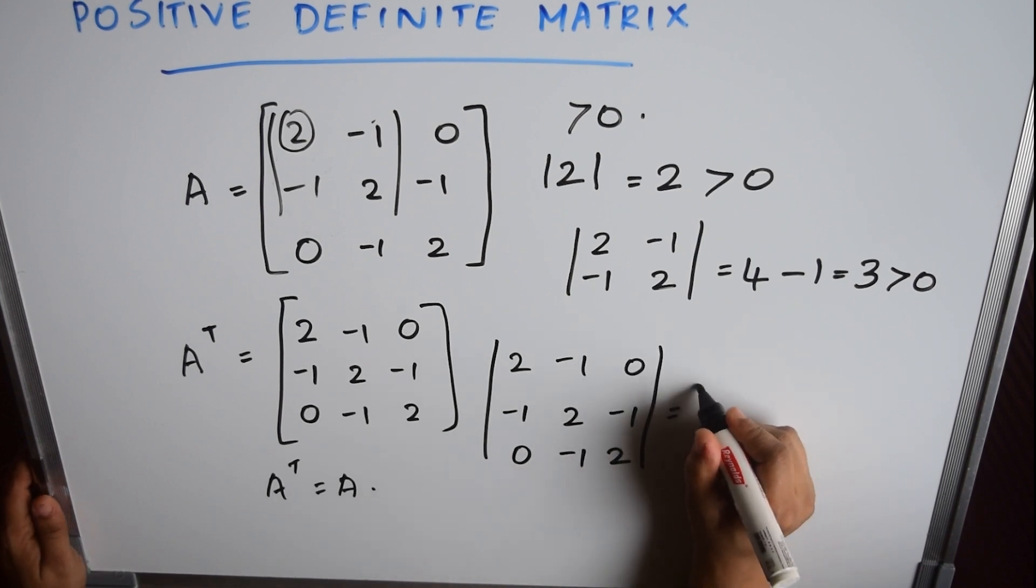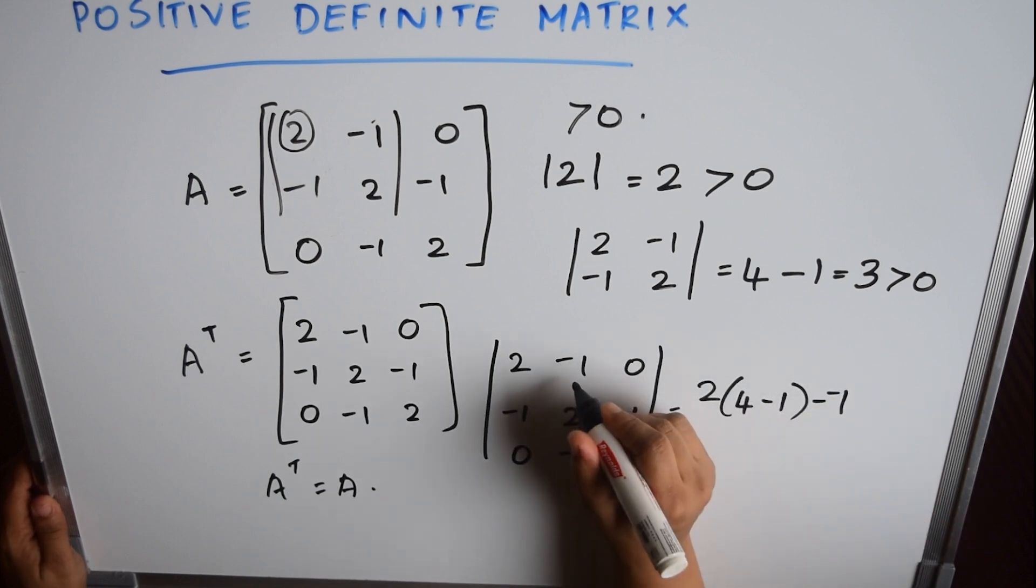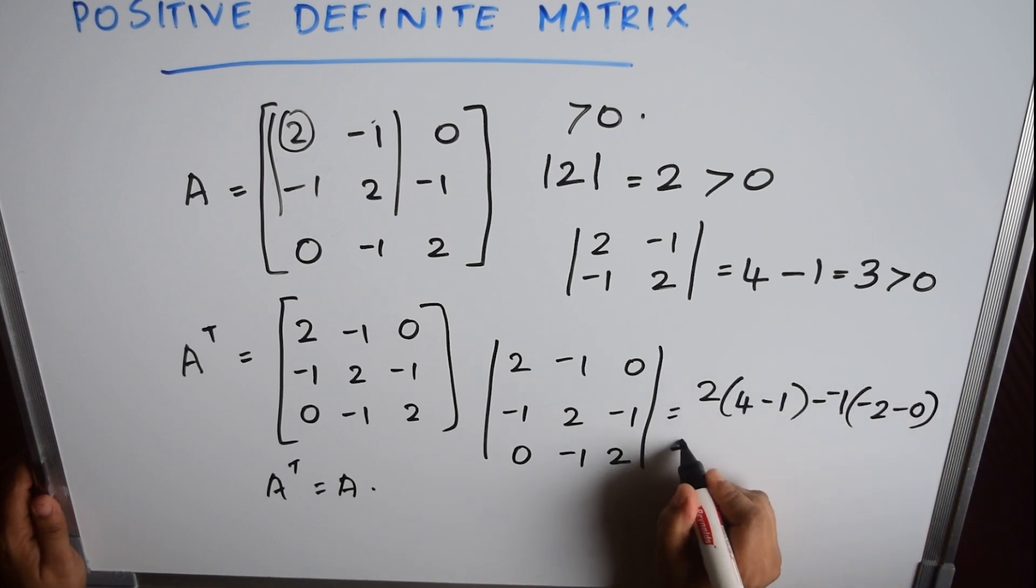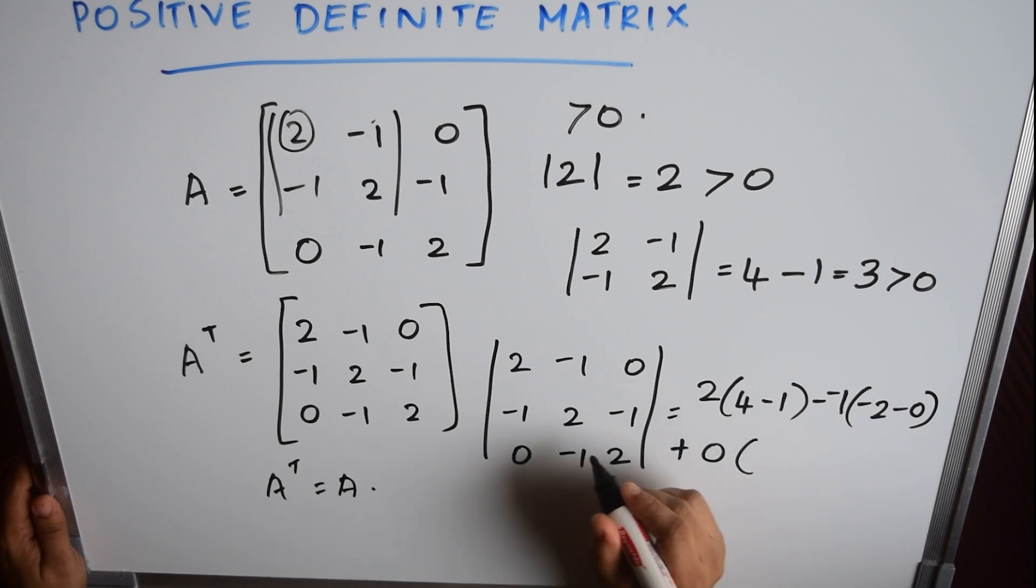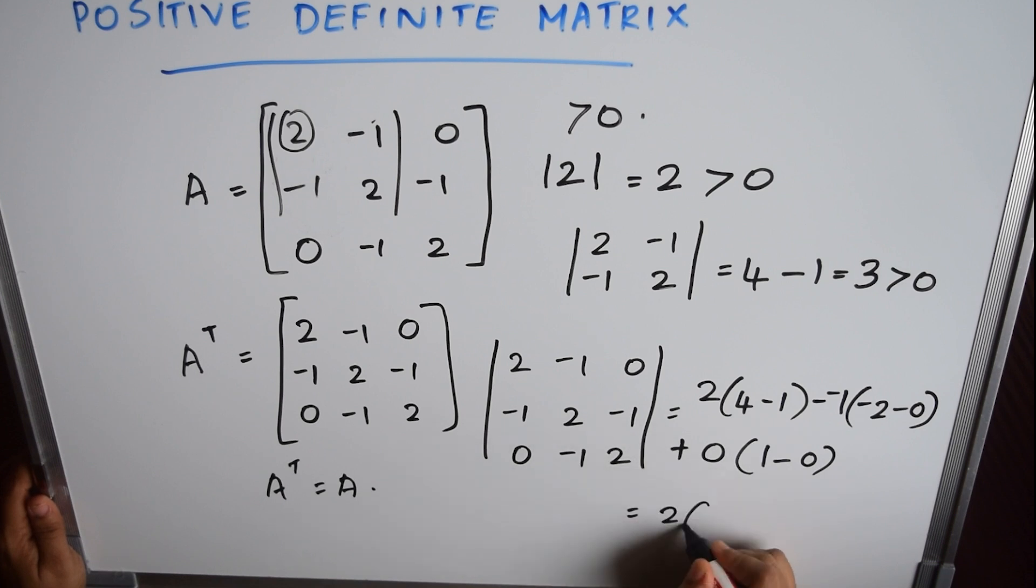It will be equal to 2 into (4 minus 1) minus (-1) into (-2 minus 0) plus 0 into (1 minus 0). That will be equal to 2 into (4 minus 1 is 3) plus 1 into 2, which equals 6 minus 2, which equals 4, which is greater than 0.